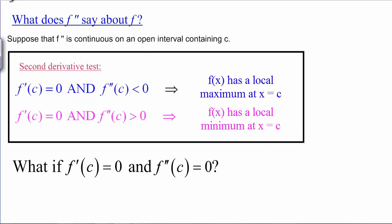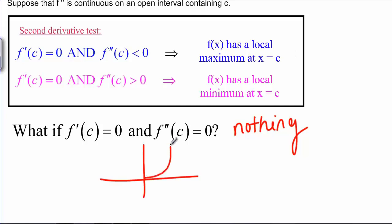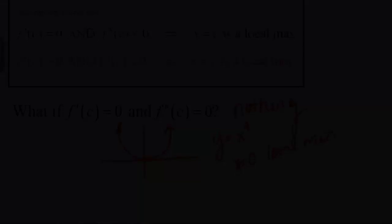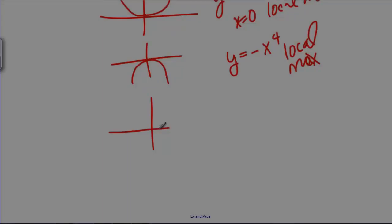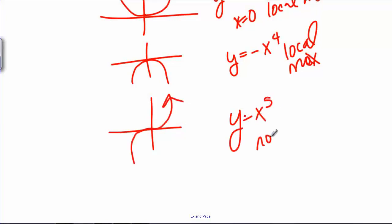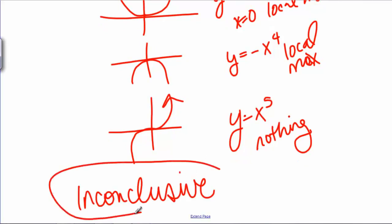But what about if F prime of C is zero and F double prime of C is zero? We have a critical point, the derivative is defined there, but both the first and second derivatives give us zero. The answer is we can't really say anything at all. For example, Y equals X to the fourth has a local min at X equals zero with both derivatives zero there, Y equals negative X to the fourth has a local max, and Y equals X to the fifth has neither. If the second derivative gives you zero at the critical point, this is inconclusive — meaning you can't use the second derivative test.